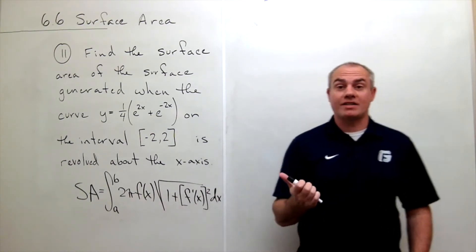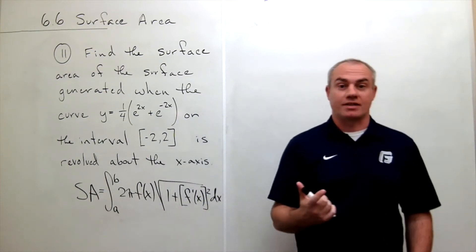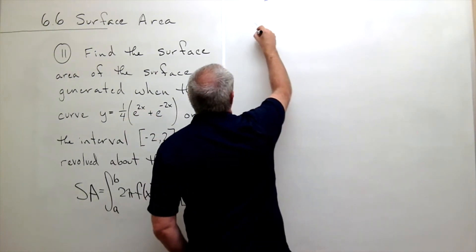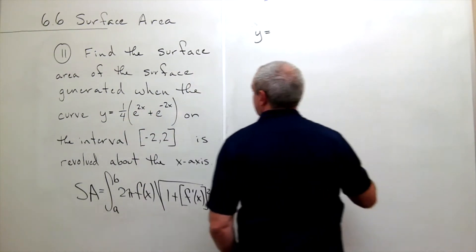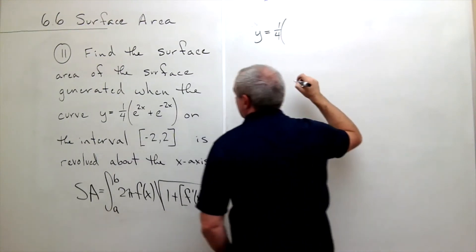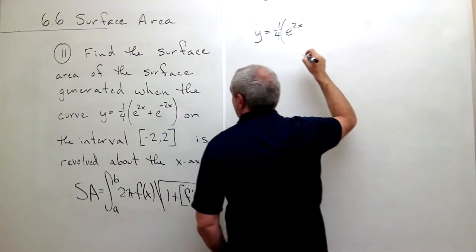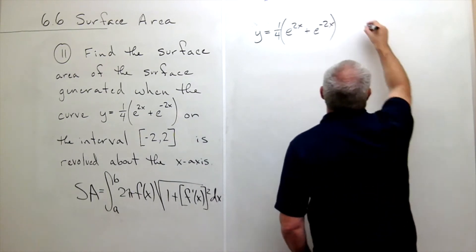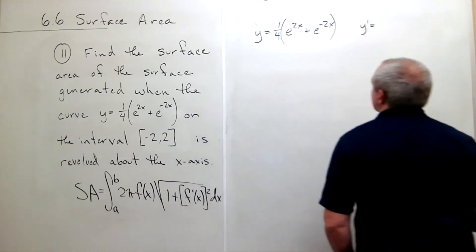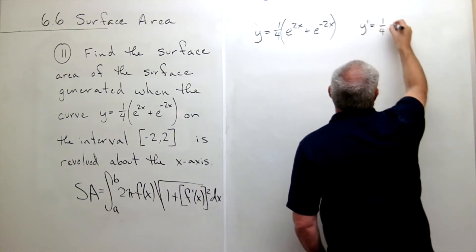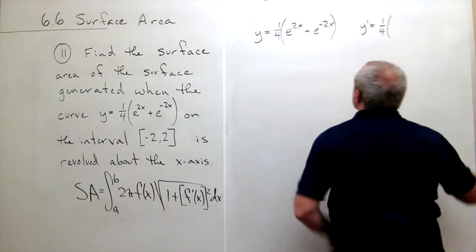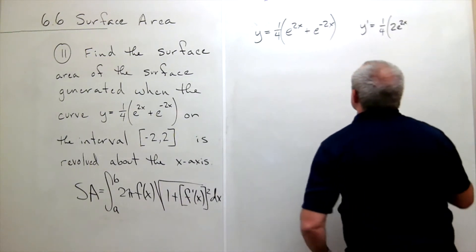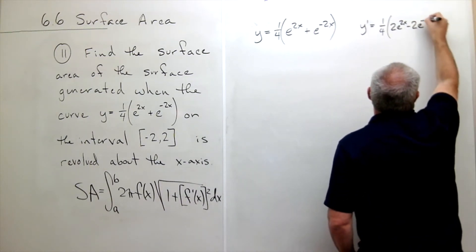We need to know what f of x is and what f prime of x is. We already know that y equals one-fourth of e to the 2x plus e to the negative 2x. Taking the derivative, y prime equals one-fourth times: the derivative of e to the 2x is 2e to the 2x, and the derivative of e to the negative 2x is negative 2e to the negative 2x.